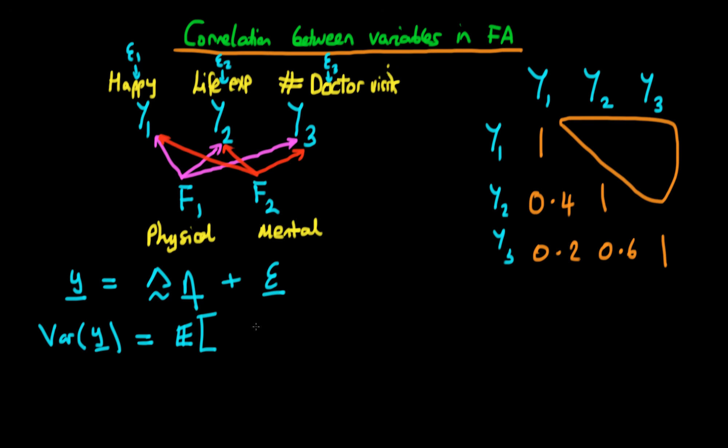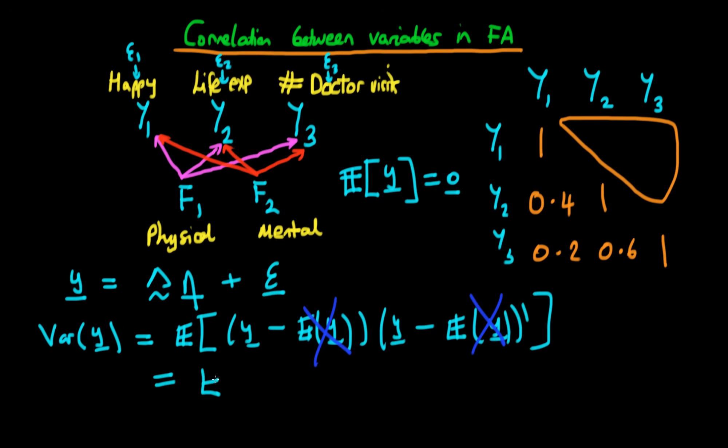The variance of a vector, if we're dealing with something which is a random vector rather than just a random variable, this is the same as the expectation of y minus the expected value of y times y minus the expected value of y, all transposed. Then what we do is we use one of the assumptions which we actually spoke about in the last video, which is just that the expected value of y is equal to zero because we standardize the variable by removing its mean. What this does is it removes these expected value of y terms here, which makes our expression that much easier to deal with. It's just the expected value now of y times y transposed.